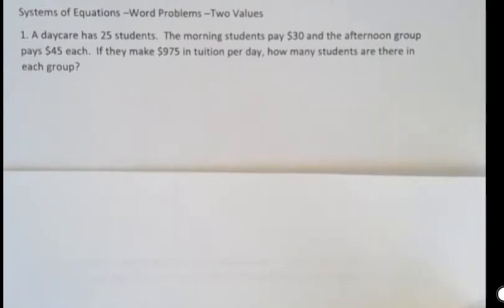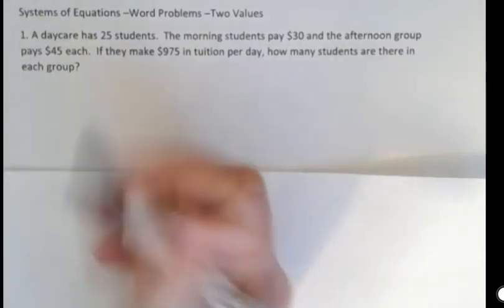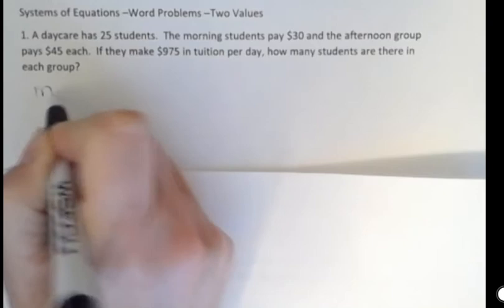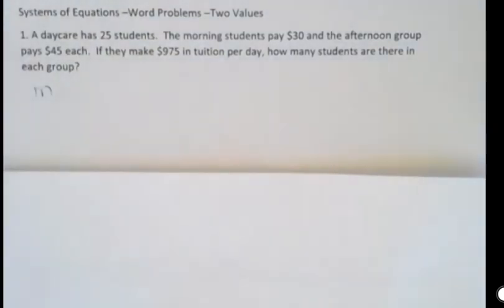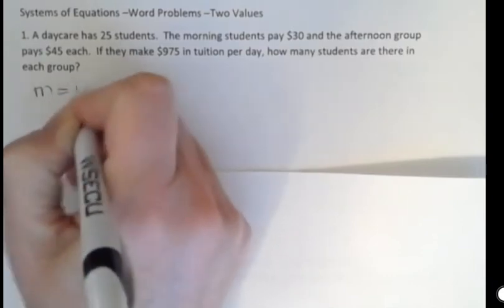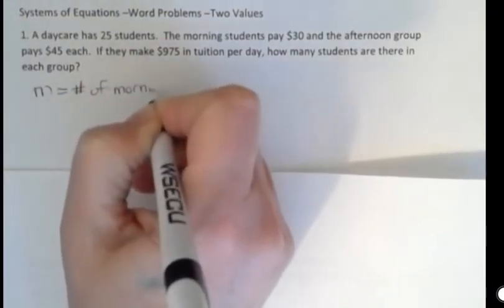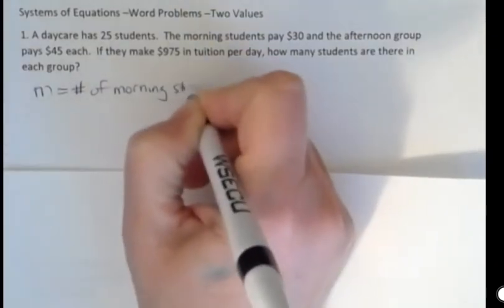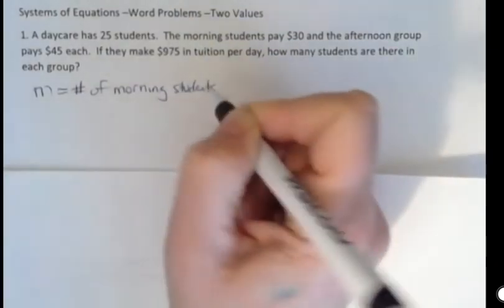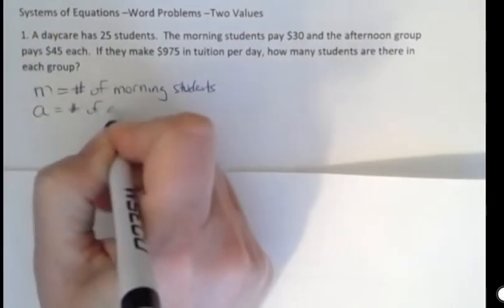So I'm going to say there's two different things we're looking for. I'm going to call morning students M being the morning students. M equals the number of morning students. You don't want to skip this step where you declare your variables. It helps you understand what you found and what you're looking for. I'm going to say A equals the number of afternoon.